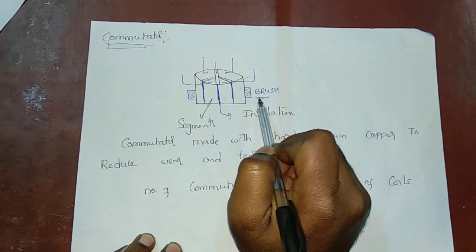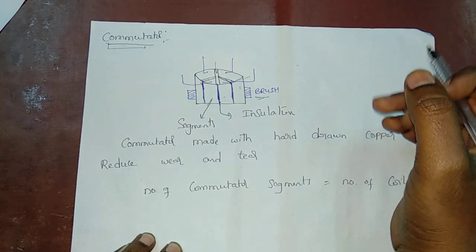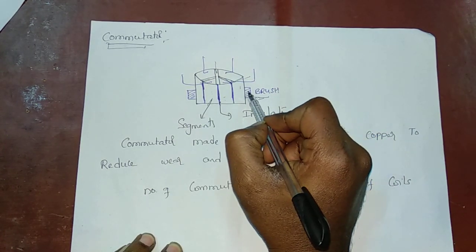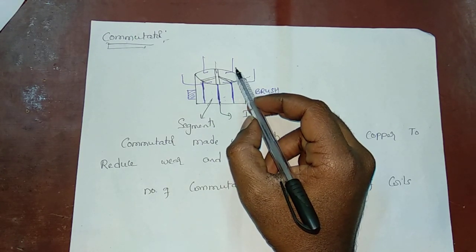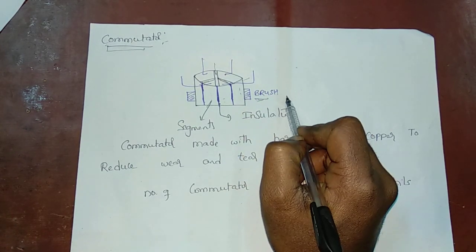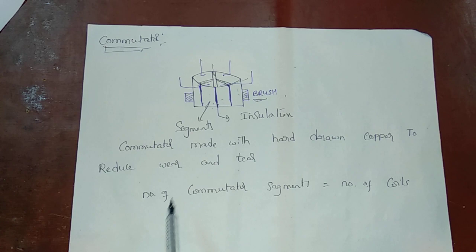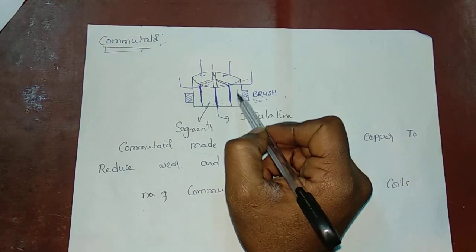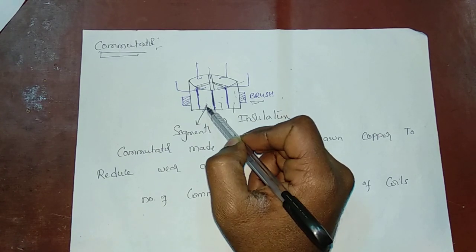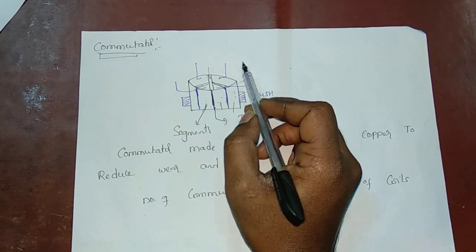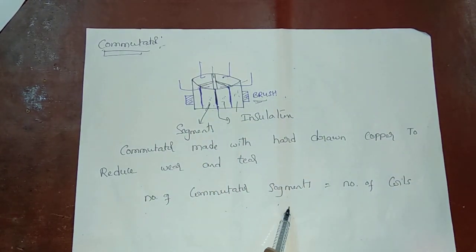This is where the commutator comes in. The commutator converts AC to DC. We connect the armature conductors through brushes to the commutator. The commutator segments are insulated from each other. The number of commutator segments equals the number of coils — every coil is connected to one commutator segment. For example, if there are 220 coils, there are 220 segments.